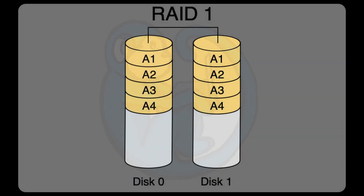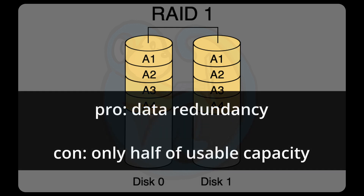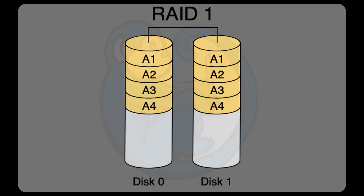Next is RAID 1, what's called Mirrored Mode. It takes at least two drives, and the data is actually written on both drives. The advantage is that because you have two copies of the data, even if one drive goes bad, you still have a complete set of data. The negative is you basically have half the space — if you have two one-terabyte drives and you make a RAID 1, you end up with only one terabyte of usable storage because of the redundancy.